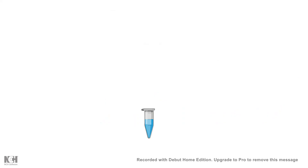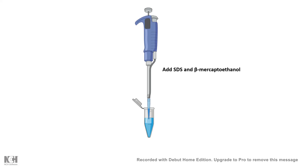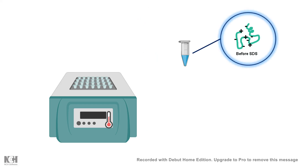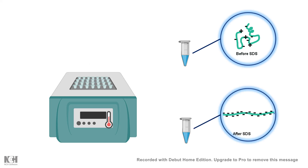Now let's go through the process. Starting with a protein solution, we add SDS and beta-mercaptoethanol. SDS and beta-mercaptoethanol denature the protein, get rid of all the disulfide bonds, and mask all the different charges on the protein with a uniform negative charge. After that, you put it in an incubator to boil it for some time. After SDS treatment, the charges are uniformly masked and everything is linearized — all secondary structures are broken.